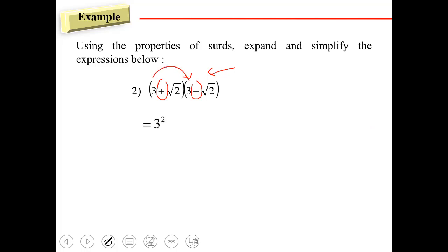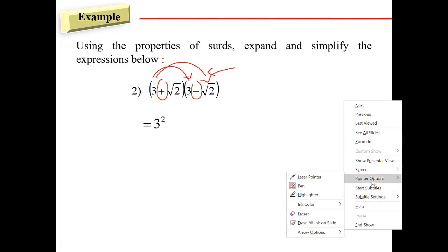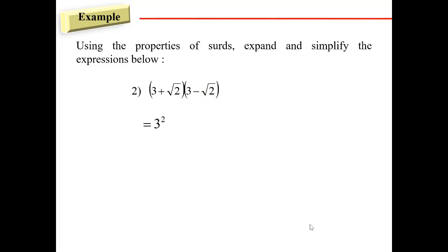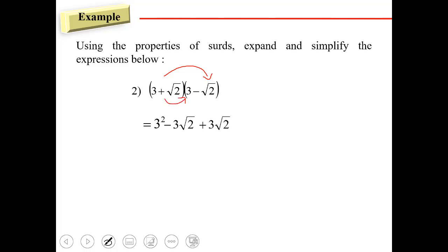Three squared, and then three times negative square root of two. Here, three times negative square root of two, and then negative square root of two times square root of two, so we'll have square root of two squared.